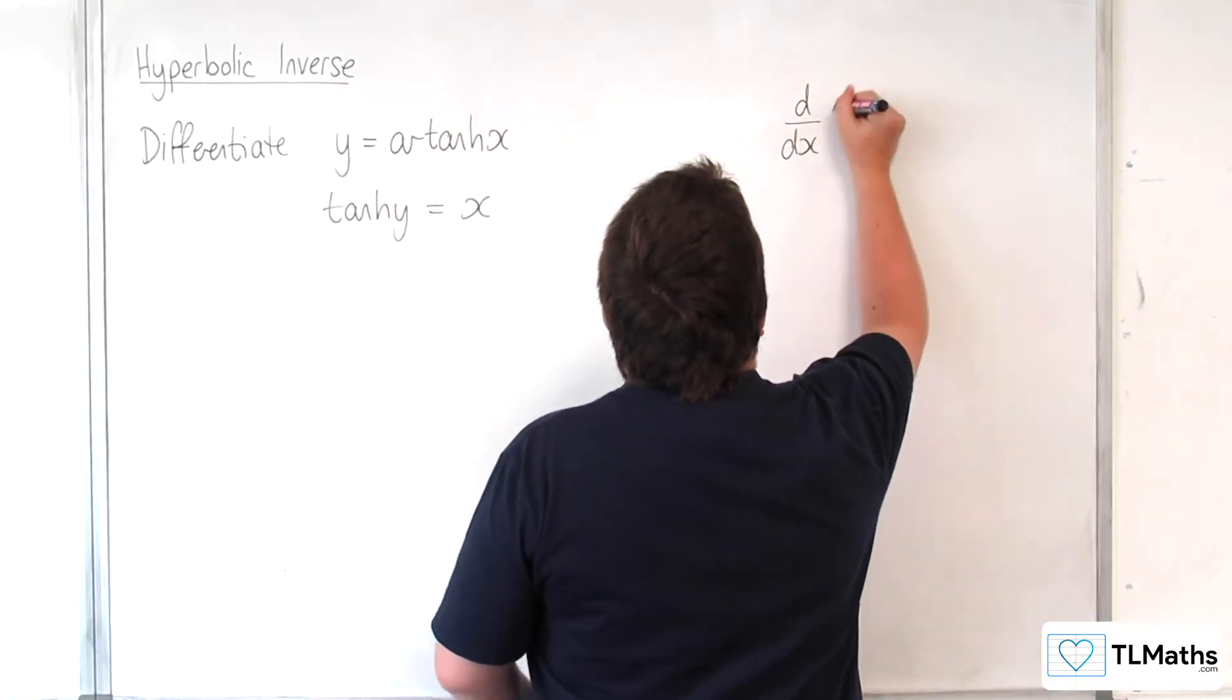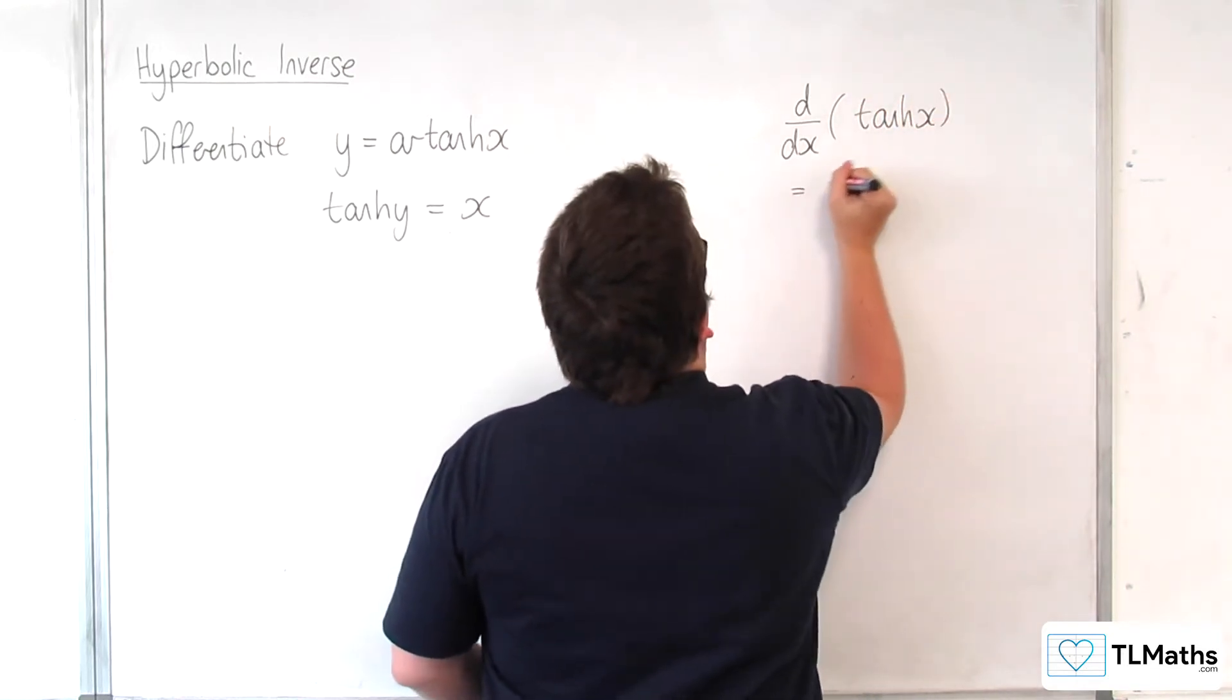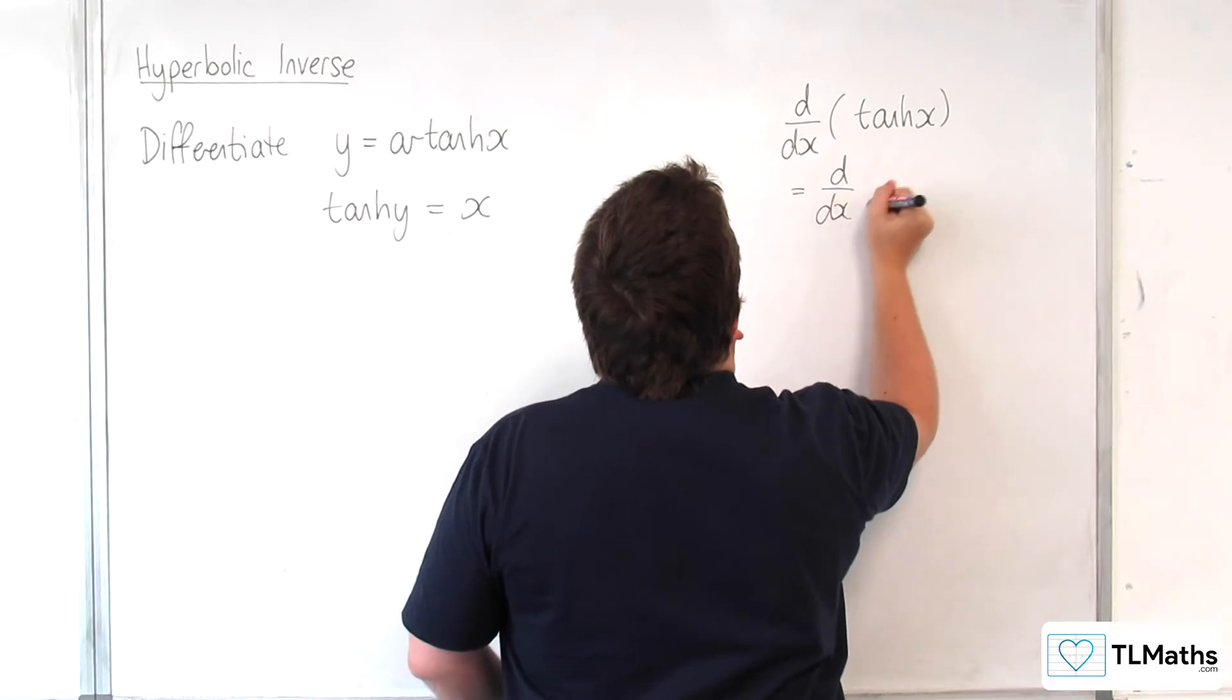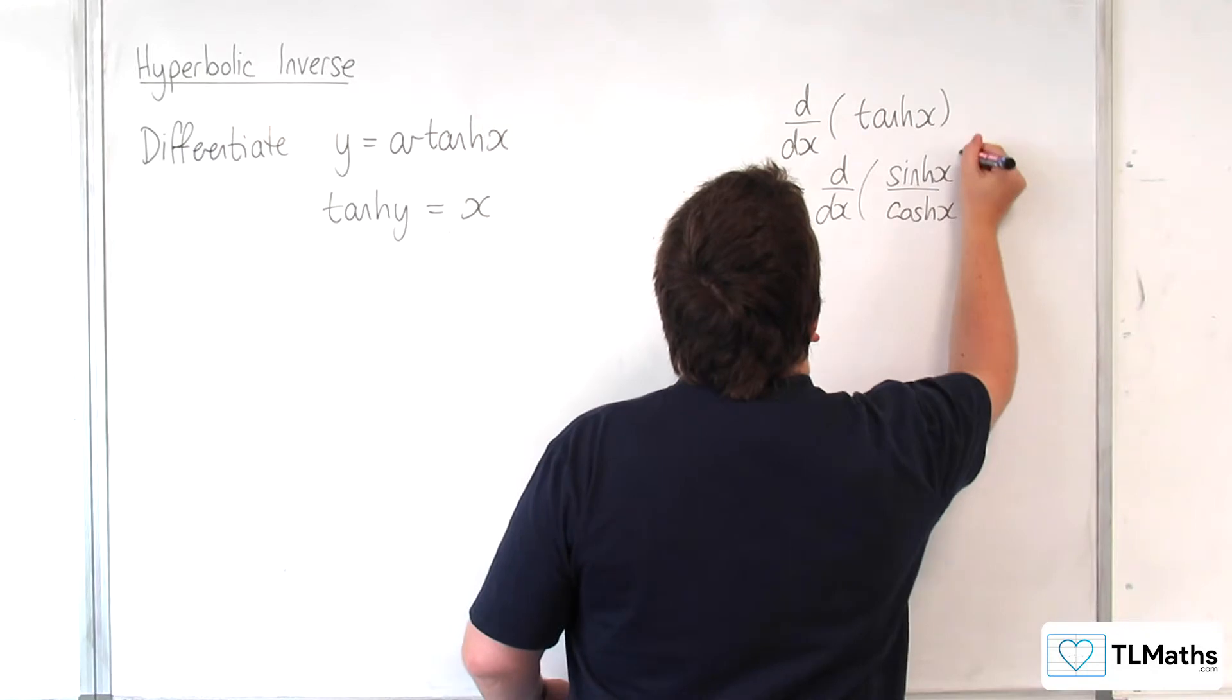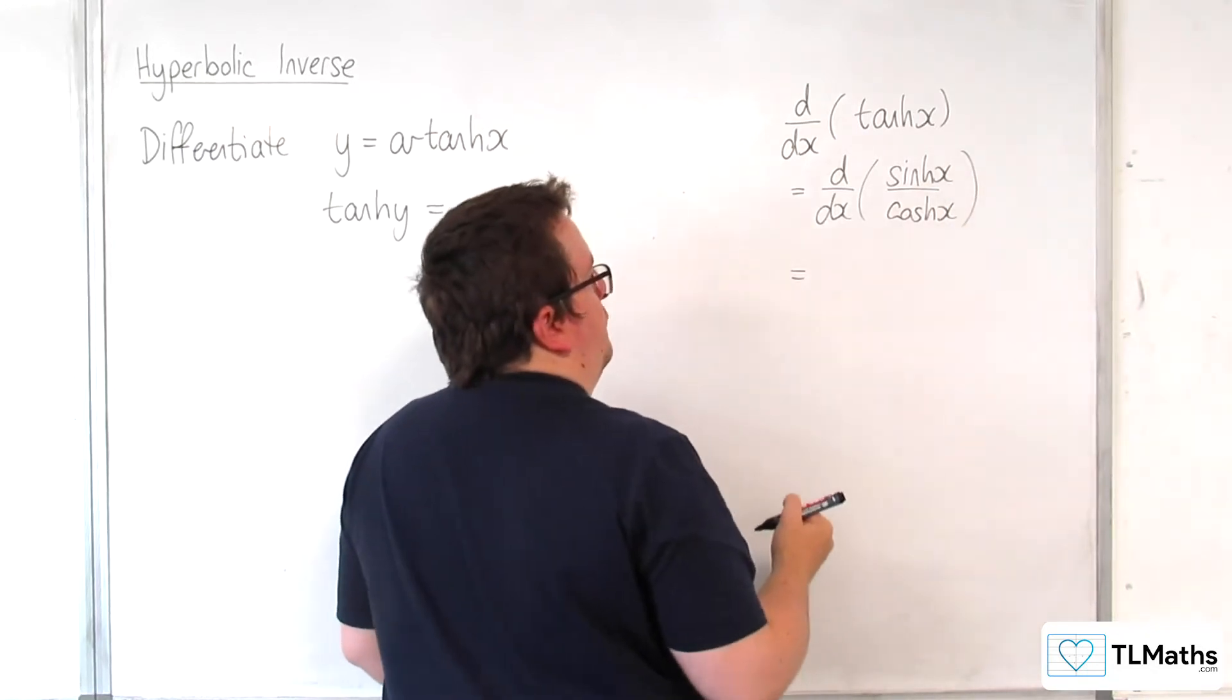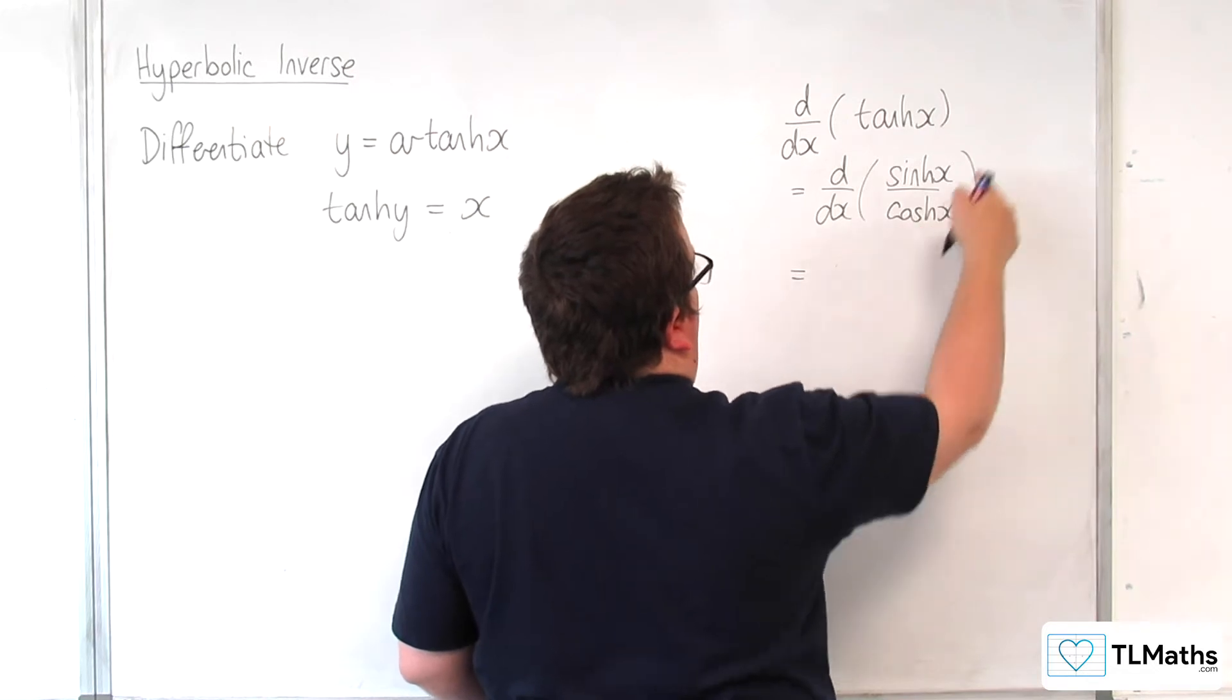So, the derivative of tanh of x would be equal to the derivative of sinh of x over cosh of x, which we can differentiate using the quotient rule. So we have the bottom times the derivative of the top, so cosh x times cosh x is cosh squared x.